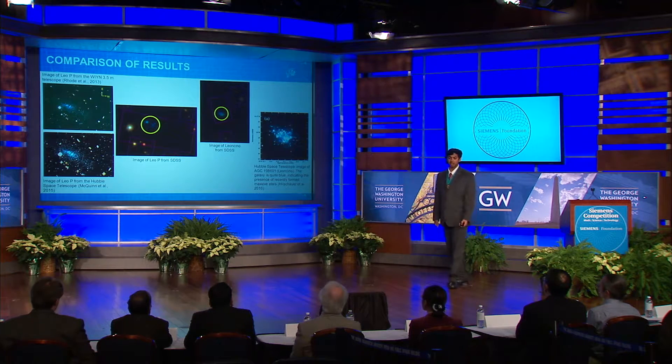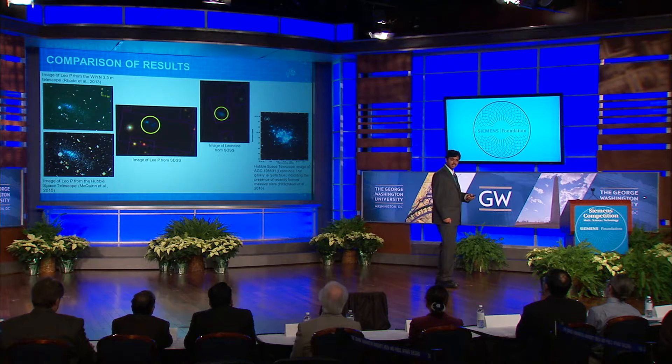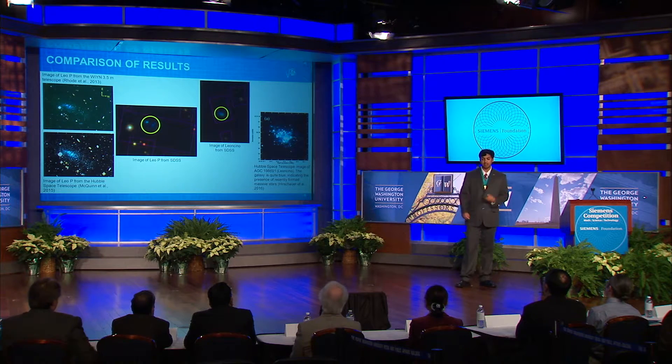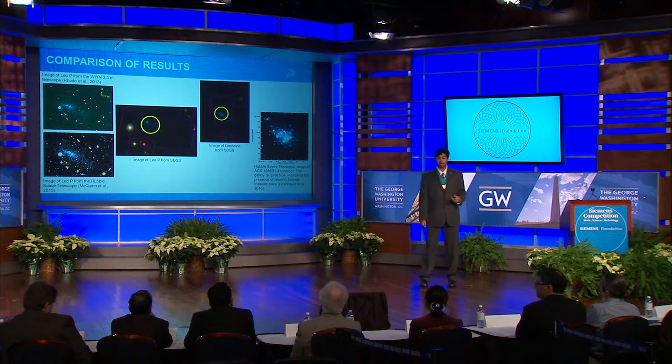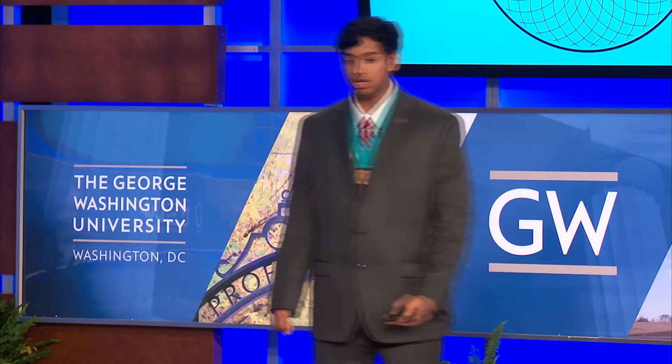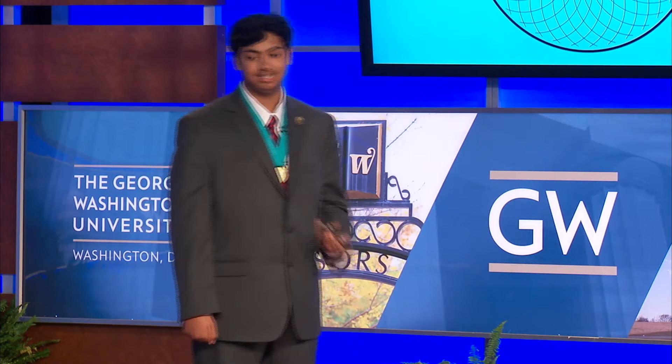Leoncino, on the other hand, is a more interesting case. It's one of those more compact ADGs, so it was not identified as separate photometric objects and was able to be separated only by Hubble. This emphasizes the importance of follow-up observations. Not only does the Leo P image appear much clearer in WIYN and Hubble, but the Hubble image of Leoncino was actually able to resolve the constituent stars, which SDSS could not.